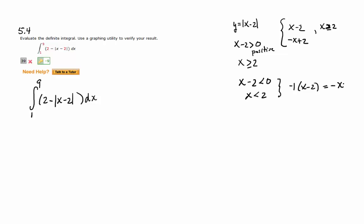And what's that going to be? Negative x plus 2. It's always going to be when you have a sum of terms, it's going to be all the opposite signs. It's going to be the opposite of the original. So this is going to be x less than 2.